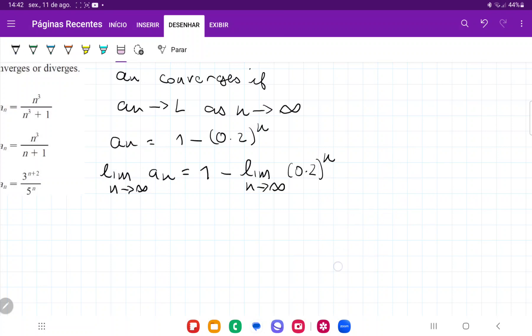So from here we can say that the absolute value of 0.2 is less than 1, therefore the limit as n approaches infinity of 0.2 to the power of n is equal to 0.